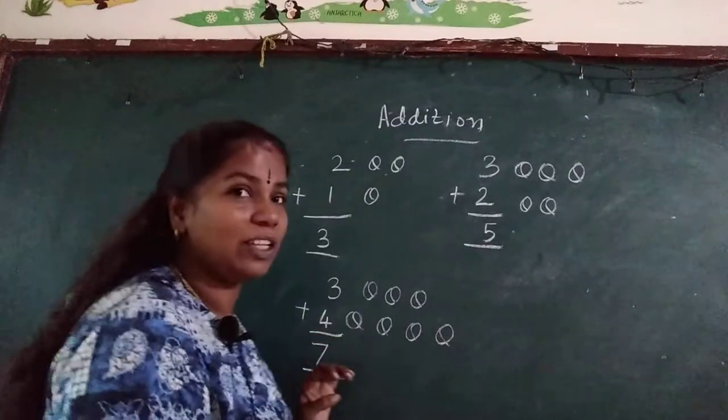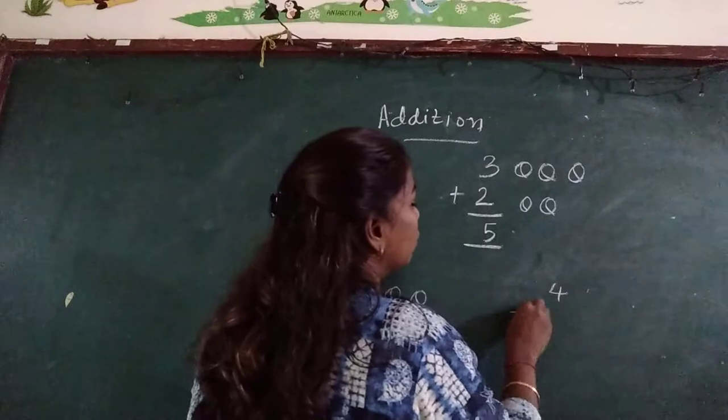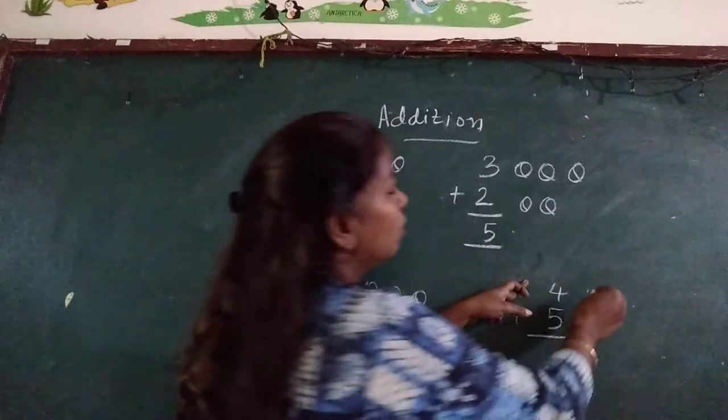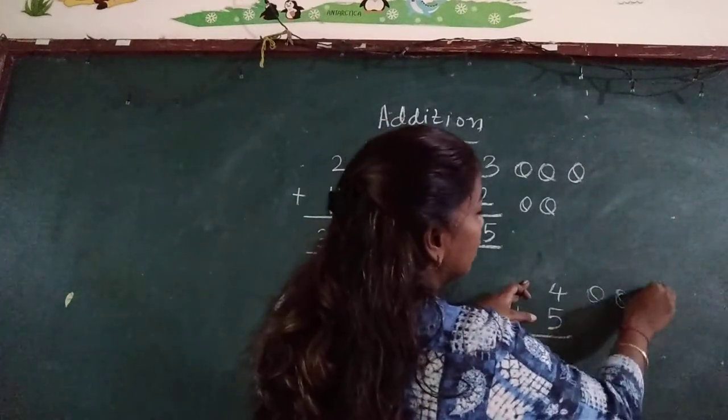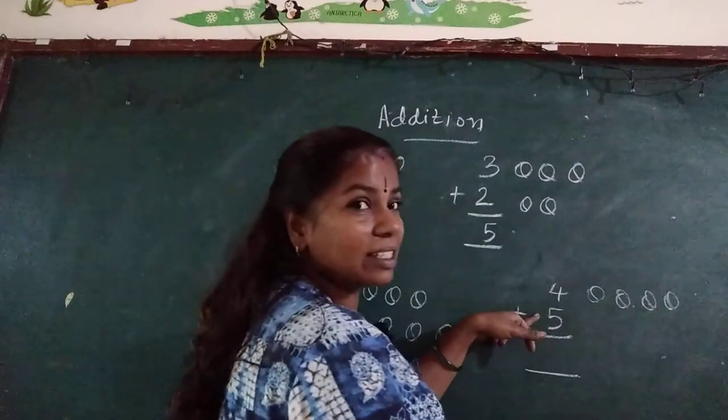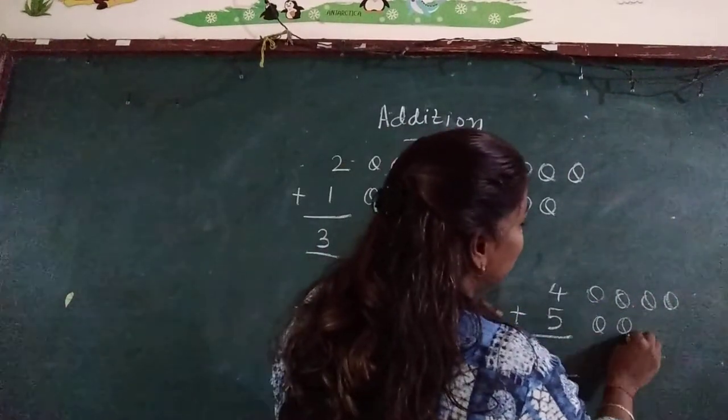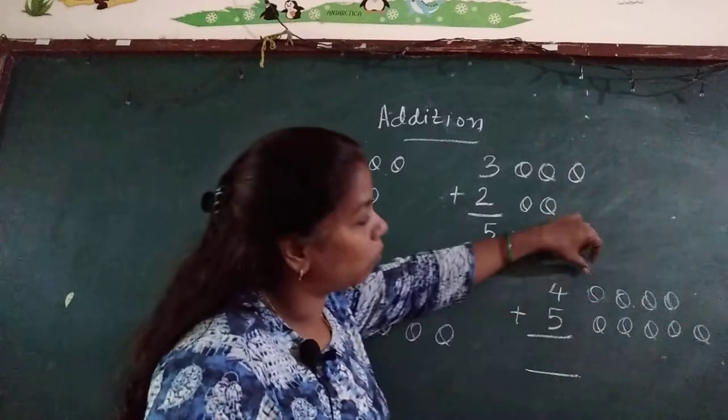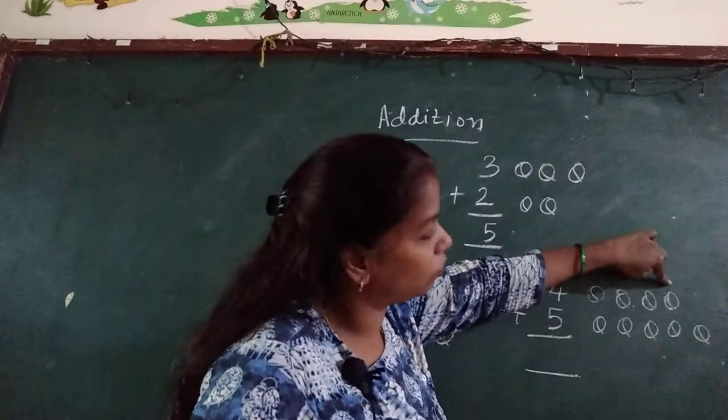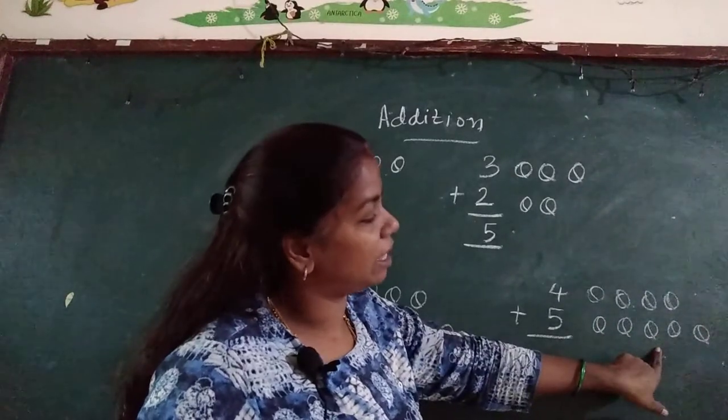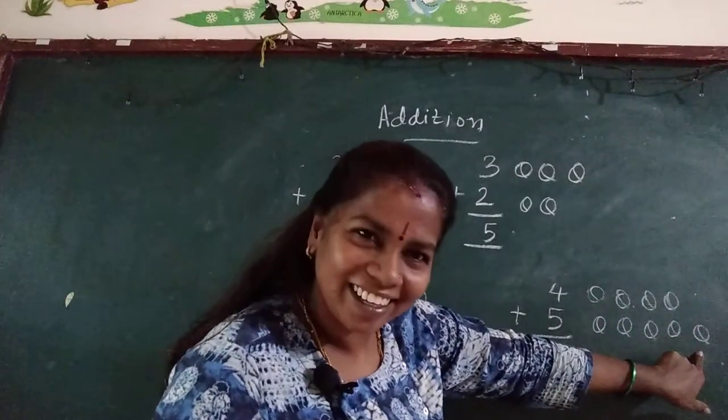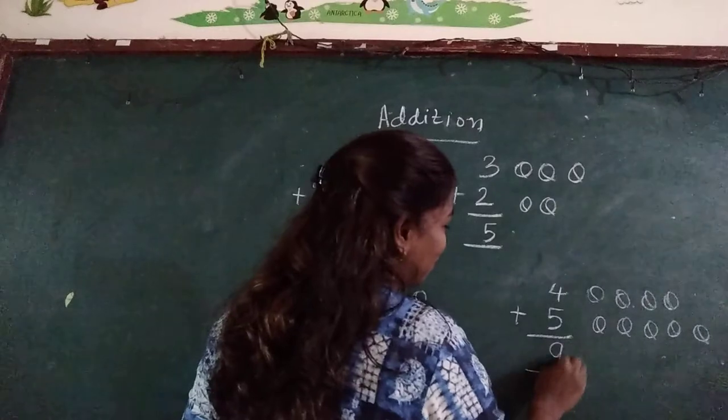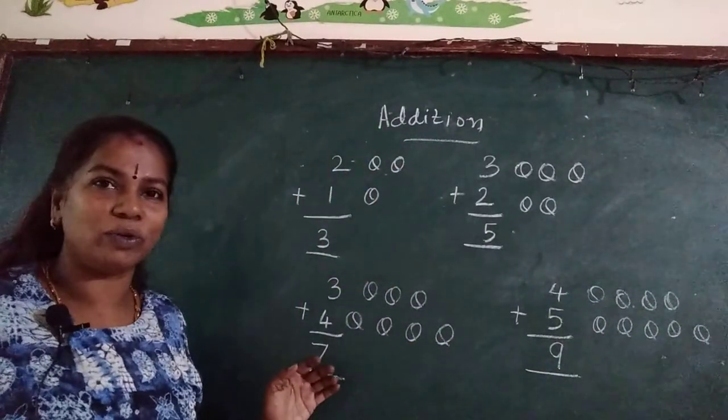Very good. I think you are understanding. We will do one more sum: 4 plus 5. For 4, how many balls will you make? 1, 2, 3, 4. Now for 5: 1, 2, 3, 4, 5. Now we will count: 1, 2, 3, 4, 5, 6, 7, 8, and 9. So 4 plus 5 is equal to what? 9. Very good. I think you understood now how to do addition.